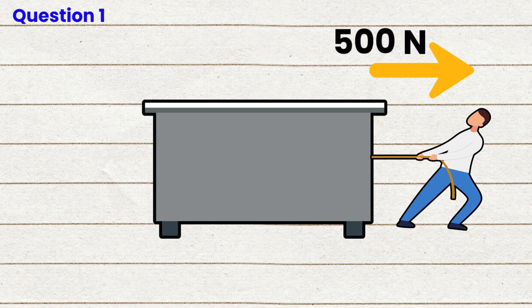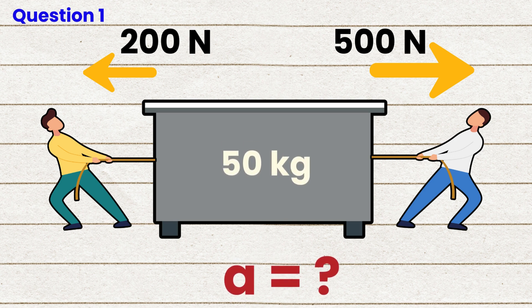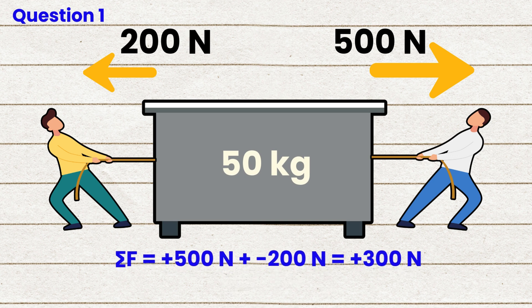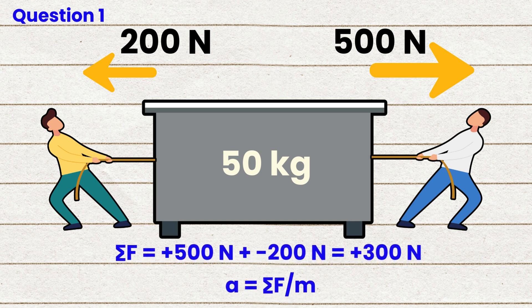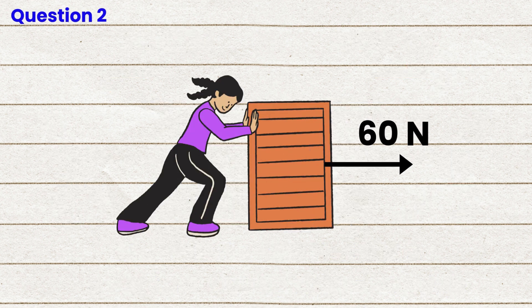Question 1. Isaac pulls a desk rightward with a 500 newton force. Albert pulls the desk leftward with a force of 200 newtons. What is the acceleration of the 50 kilogram desk? The net force equals +500 newtons plus −200 newtons, which equals +300 newtons. A equals sigma F over M, which equals +300 newtons divided by 50 kilograms, which equals +6 meters per second per second.